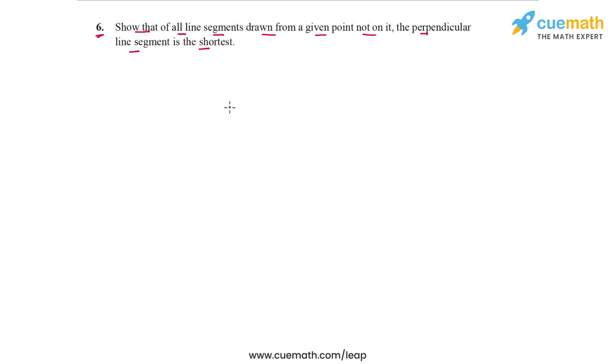So coming back to our problem statement, let's prove this fact in a rigorous manner that the perpendicular line segment will be the shortest. So I've drawn this figure for you where we have this line L and we have this point P that is not on the line L.